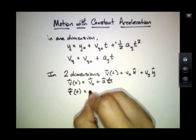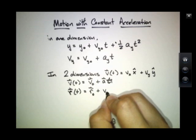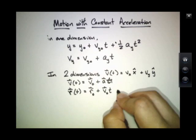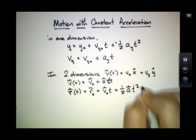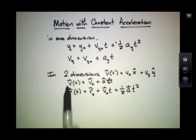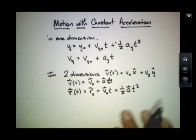and r(t) equals r-naught plus v-naught t plus one-half a times t squared, where v, v-naught, a, and r are all vectors. That means they have a component in the x-direction and a component in the y-direction.